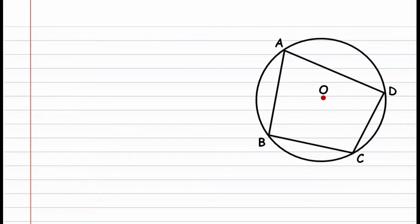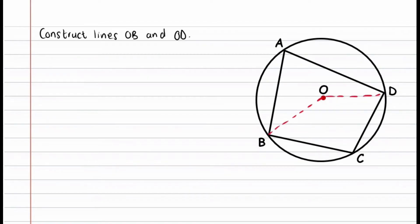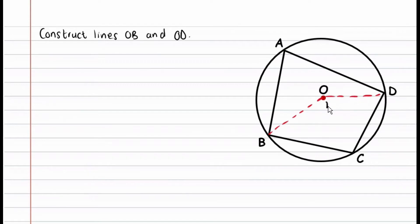In order to prove this theorem we're first going to connect the points OB and OD — make sure to always write this down. Now that we have constructed these two lines, we can see that the angle at the center has been separated into two angles. We're going to call this angle O1 and this angle O2.